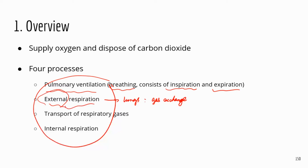External respiration is called 'external' because your lungs are connected to the external environment through the respiratory tract. The next step is transport — the blood is going to transport the oxygen that it picks up at the lungs to the body, delivering oxygen to the cells and then picking up carbon dioxide from the cells.